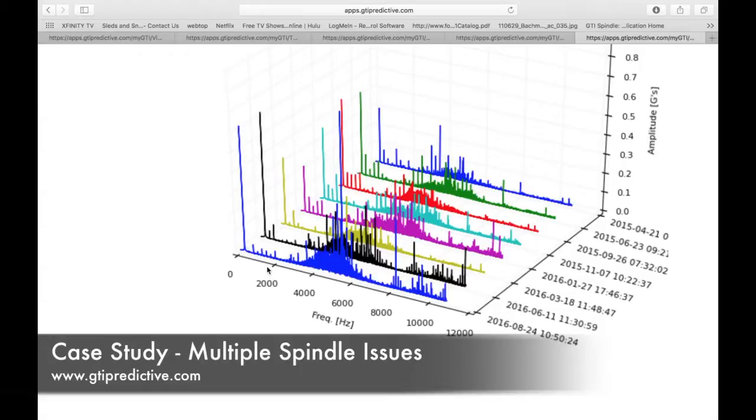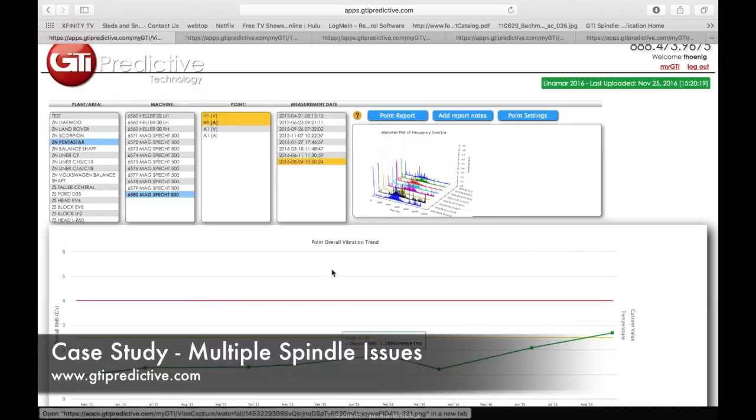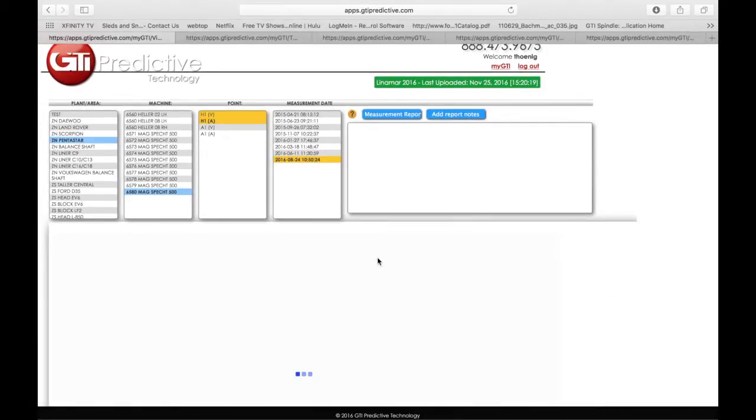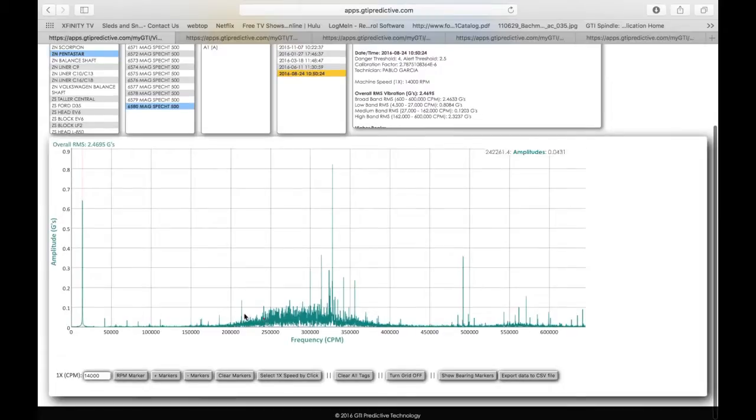Again, you can see the power of this tool, and we're just crossing the yellow threshold. So what we're seeing here as we drill into our last reading and spectrum, yes, we do have bearing defect frequencies.